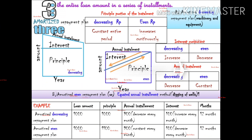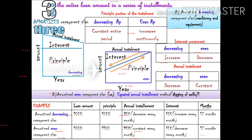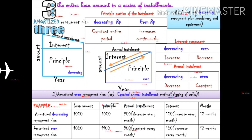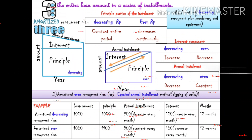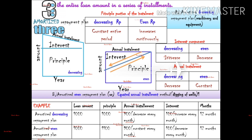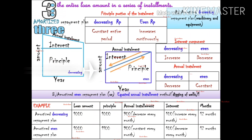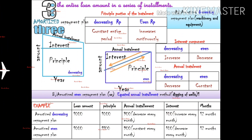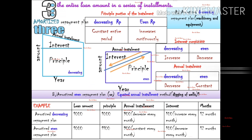Let's look at the amortized decreasing repayment plan. If you have a loan amount, the principal amount will be constant, but the interest rate will decrease. And thus the annual installment will also decrease. This is the amortized decreasing repayment plan. As the principal amount is paid, the interest rate decreases and so does the annual installment.